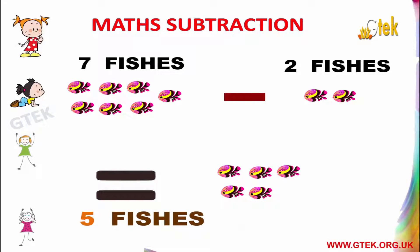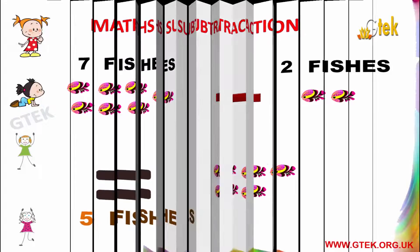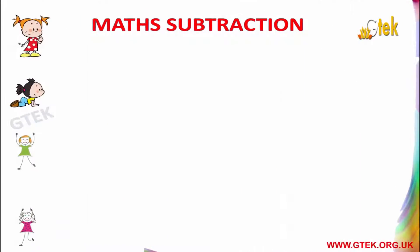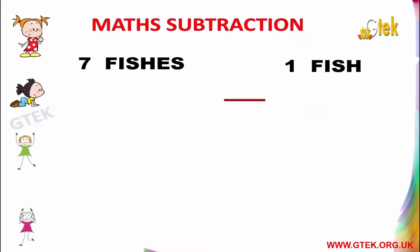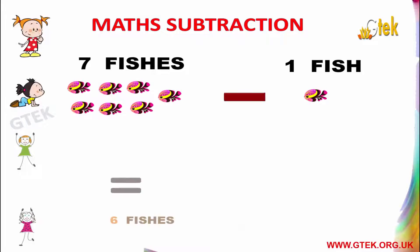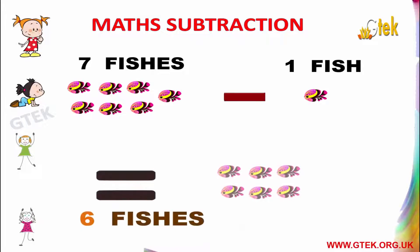7 fishes minus 2 fishes equals to 5 fishes. 7 fishes minus 1 fish equals to 6 fishes.